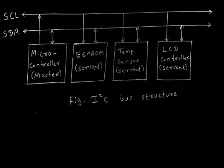Both master and slave can transmit or receive data. In normal mode, data transfer rate is up to 100 kbit/s and addressing is 7-bit. In fast mode, data transfer rate is up to 3.4 Mbit/s and addressing is 10-bit.